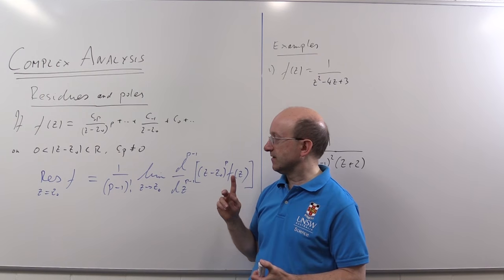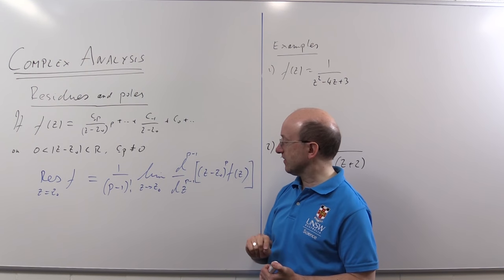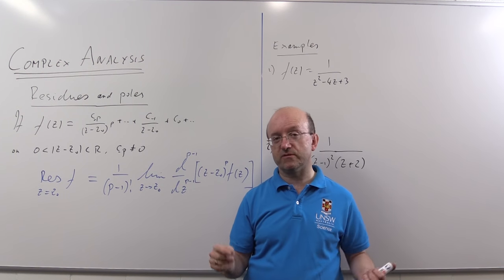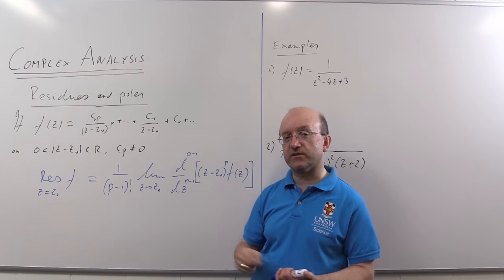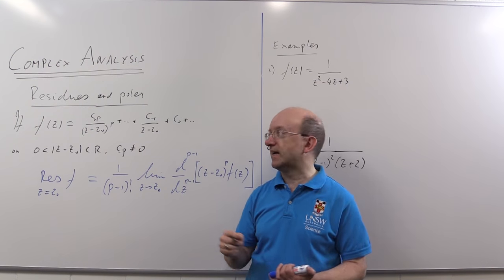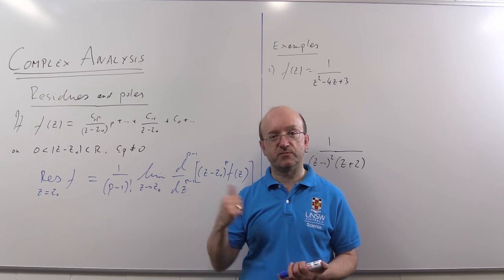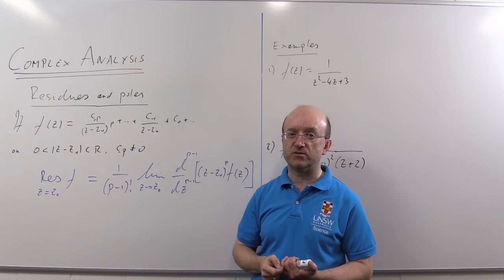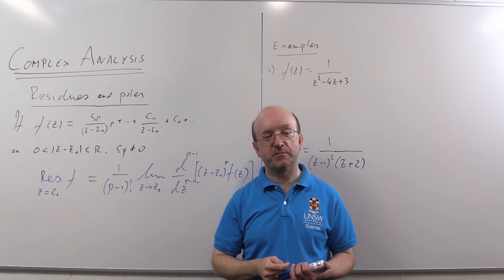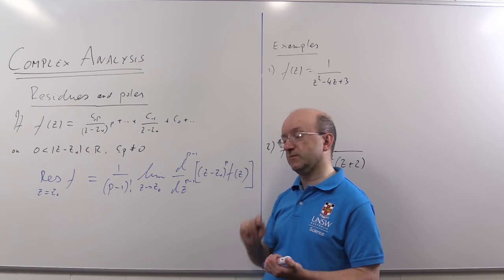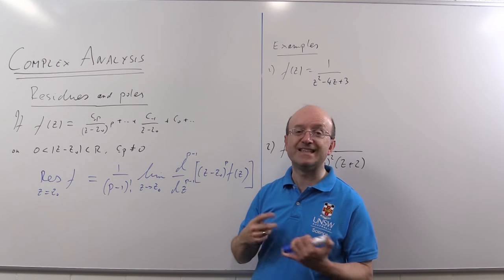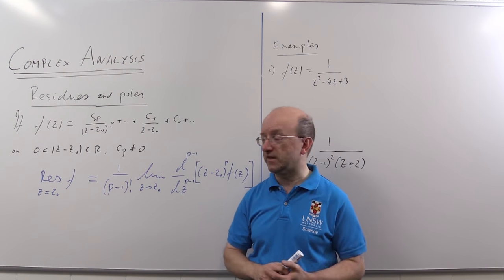So I'm going to do a few simple examples. Before I do that, another comment I should make. In the case when P is one, so we have a pole of order one or a simple pole, then we don't differentiate at all, we just multiply by Z minus Z naught and take the limit. And in fact finding that limit does two things: it proves that your pole is of order one and it finds the residue.